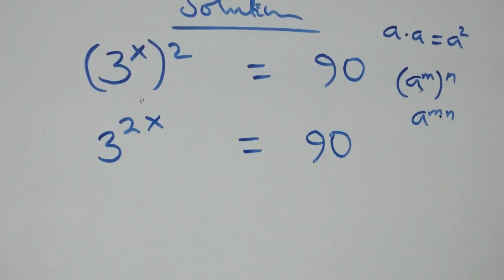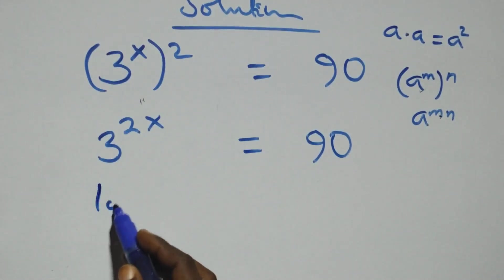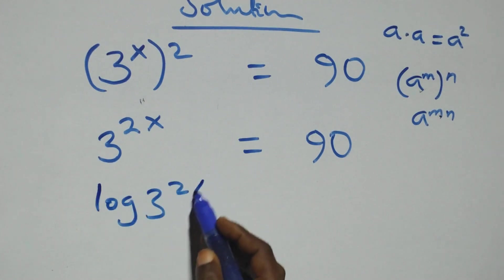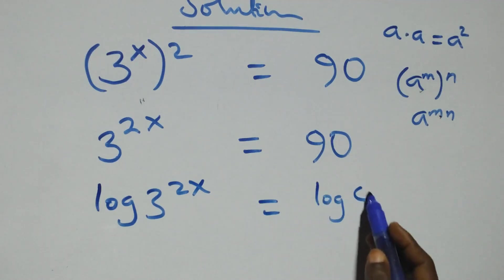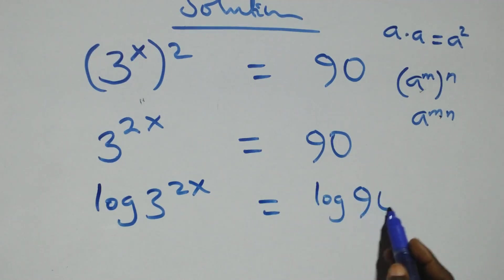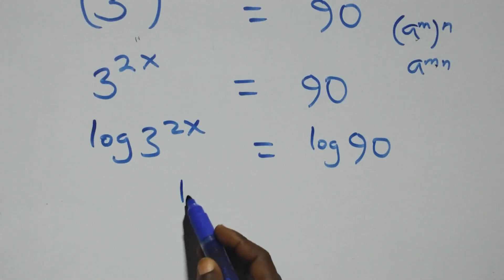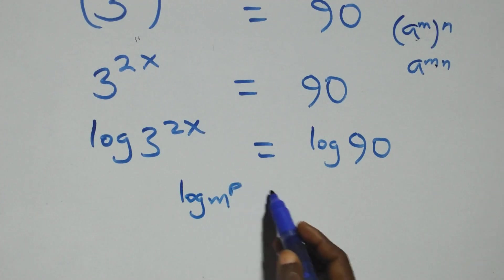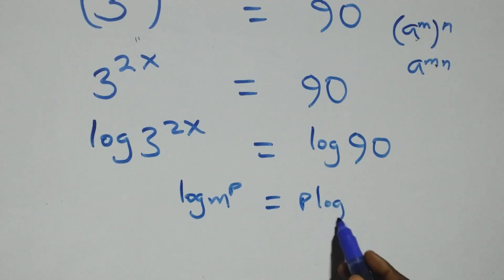The next step: we take the log on both sides. We have log of 3 raised to power 2x equals log 90. Then we apply the power rule of logarithms: when we have log of n raised to power p, this is the same thing as p times log n.